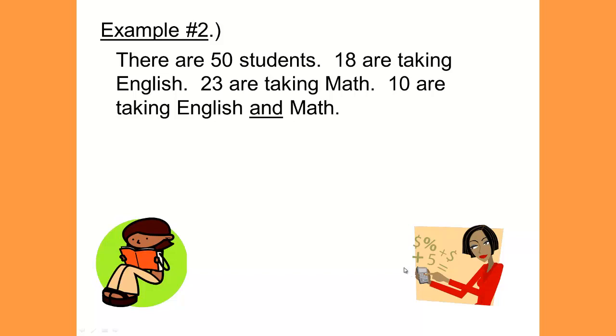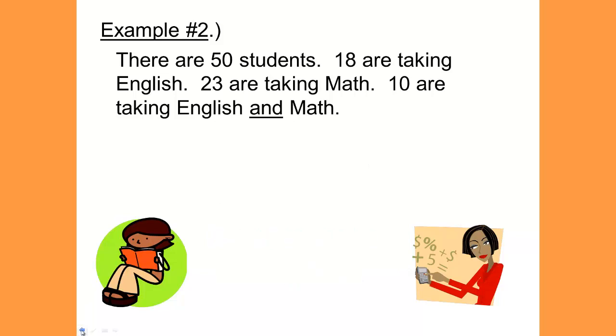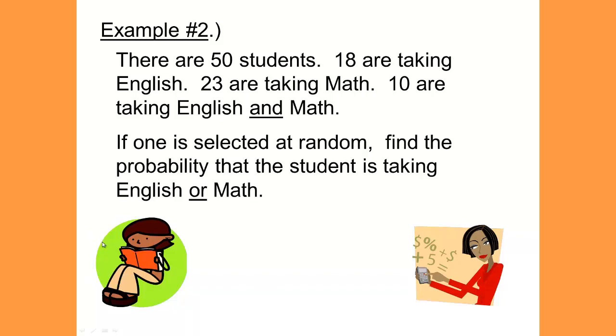There are 50 students. 18 are taking English, 23 are taking math, and 10 are taking English and math. If one is selected at random, find the probability that the student is taking English or math.